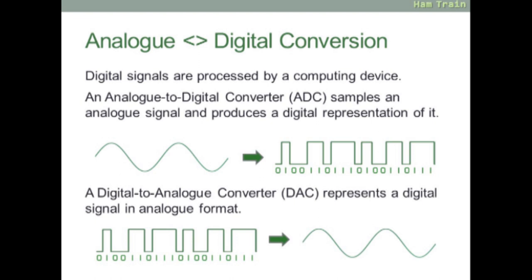The next thing you'll need to know is the analog to digital conversion process. A to D or D to A is done using a computing device. An analog to digital converter, ADC, samples analog signals and produces a digital representation of it. You can see on the screen an analog waveform converting to digital. Going the other way, digital to analog or DAC represents a digital signal in analog format. Remember: analog to digital done using a computer, ADC, and DAC digital to analog converter.